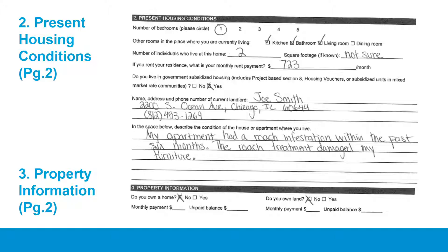Please note that you will be asked to provide one year of rental history within the past three years, as well as contact information for the person or company to whom you paid rent. Habitat Chicago reserves the right to verify this information by asking for letters from a social service agency. For the final prompt in this section, please describe your current housing situation, including any structural, safety, or health issues, if any exist.